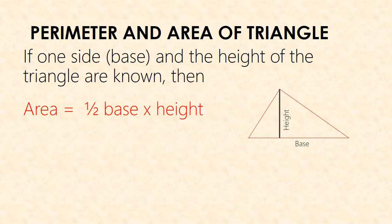If we have the value of any one of the sides of the triangle and the height of the triangle, then we can calculate the area using the formula: 1/2 times base times height.